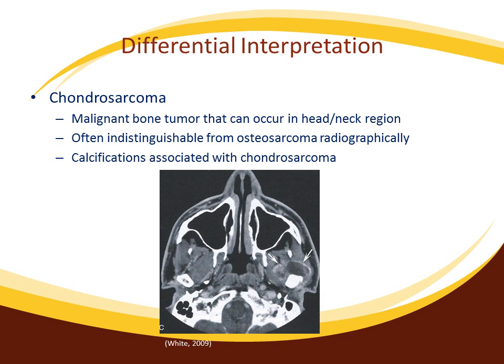For differential diagnosis, chondrosarcoma is included because it is a malignant tumor that can occur within the bones of the head and neck region. It presents radiographically similar to osteosarcoma, often indistinguishable if osseous structure is visible in osteosarcoma. Typically, calcifications associated with chondrosarcoma do not appear in osteosarcoma. In this axial scan radiograph, you can see an enlargement of the left condyle.